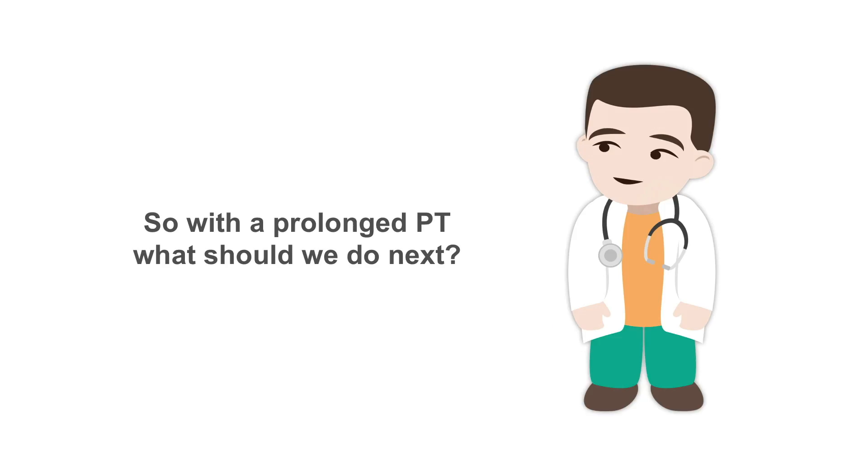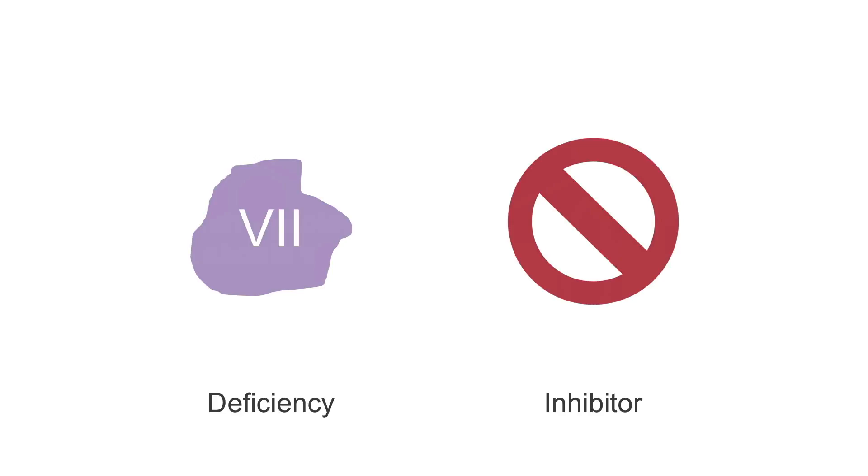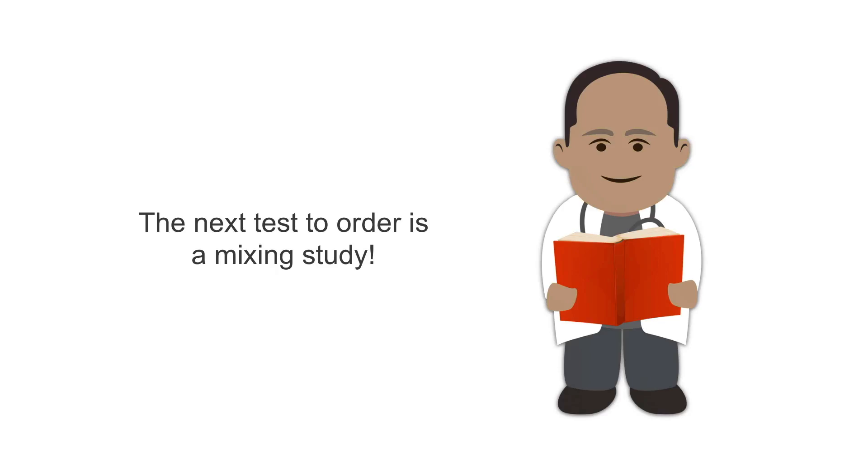So with a prolonged prothrombin time, what should we do next? As we know, there are two broad categories of prolonged prothrombin time: one is deficiency of clotting factor VII, and the second is inhibitor to clotting factor VII. The next test to order is a mixing study. This will be discussed in a separate lesson.